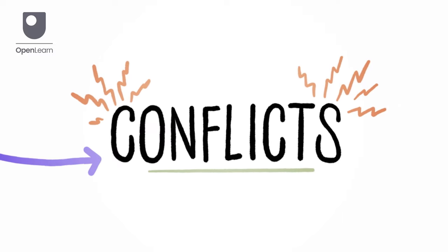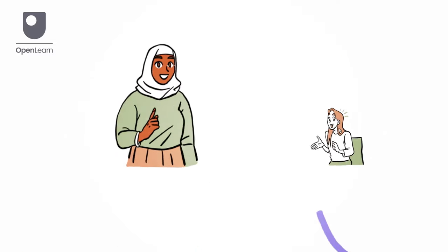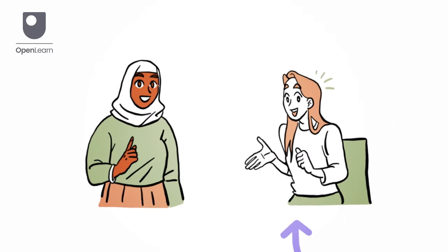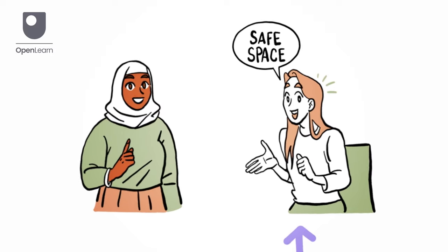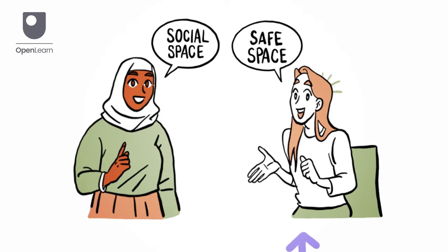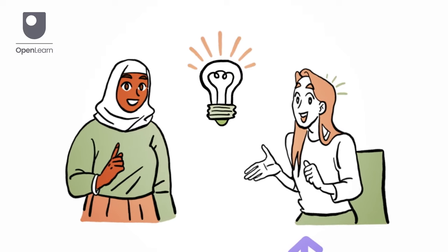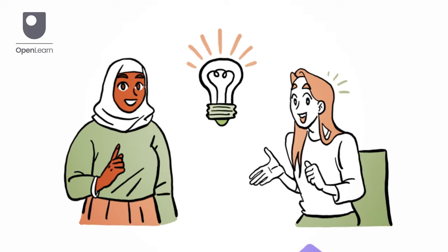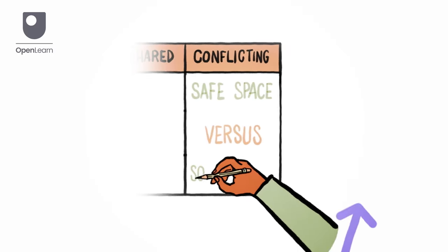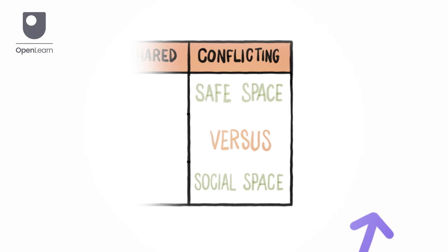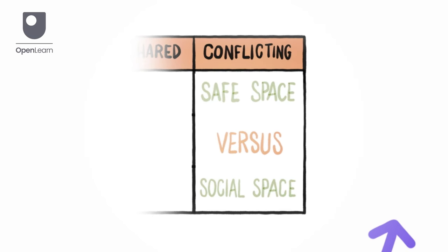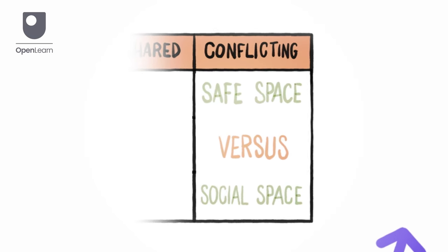Certain conflicts may become apparent in the process. For example, one person's idea for a safe space may conflict with another person's idea for a social space. Participants may discuss ways to consolidate both views under a common theme or idea, but it's useful to record any unresolved conflicts in the conflicting column. The team can then return to these issues further down the co-design process.